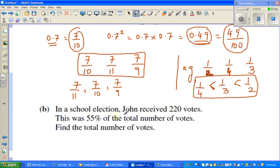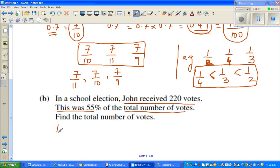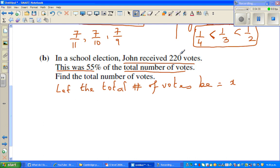In the school election, John received 220 votes. This was 55% of the total number of votes. So, I can say, we can assume like this, let the total number of votes be equal to, say, x. Let us do a little bit of algebra. So they're saying that this is 220 votes is 55%. So what they're saying is 55% of x is 220 votes.